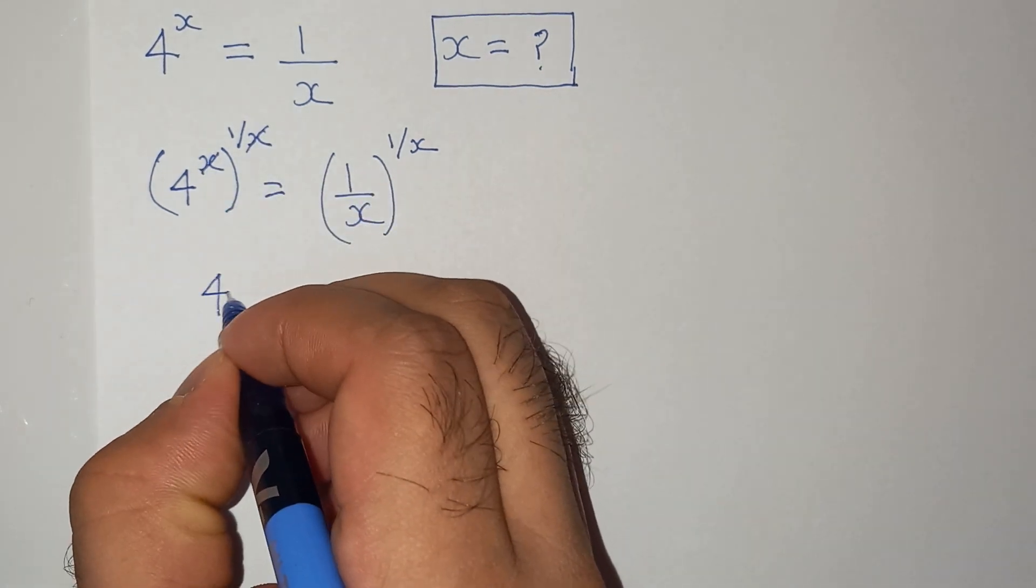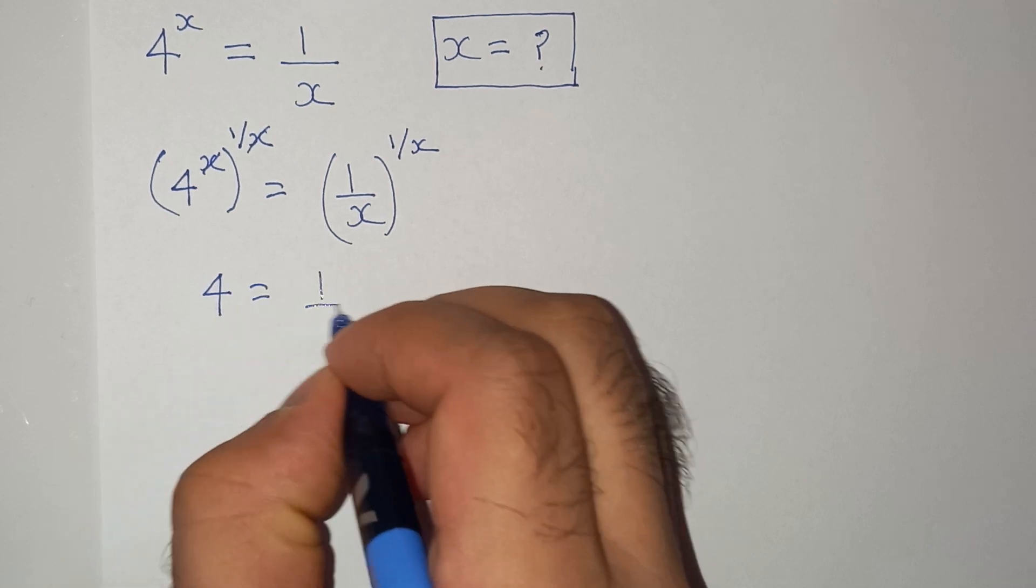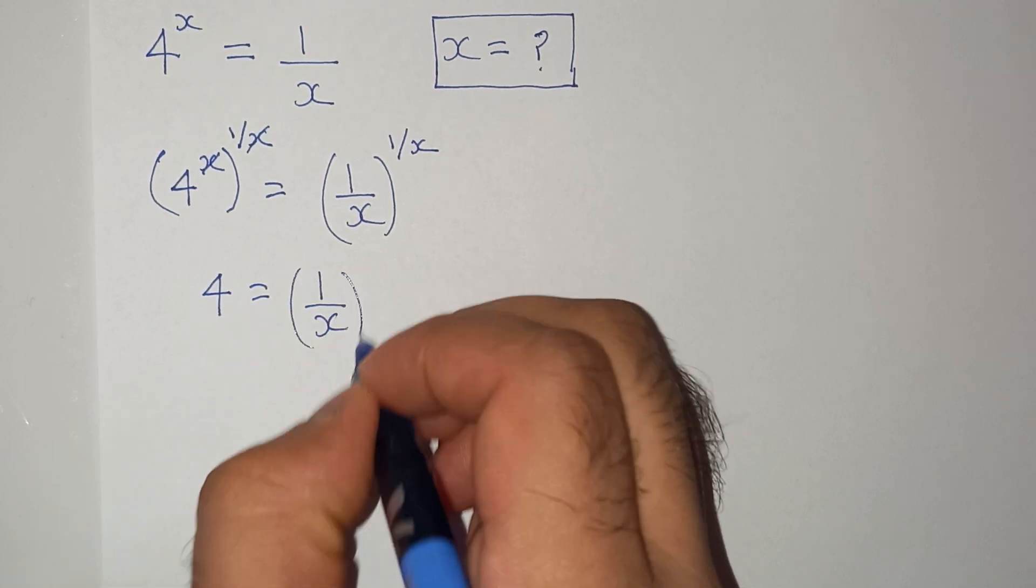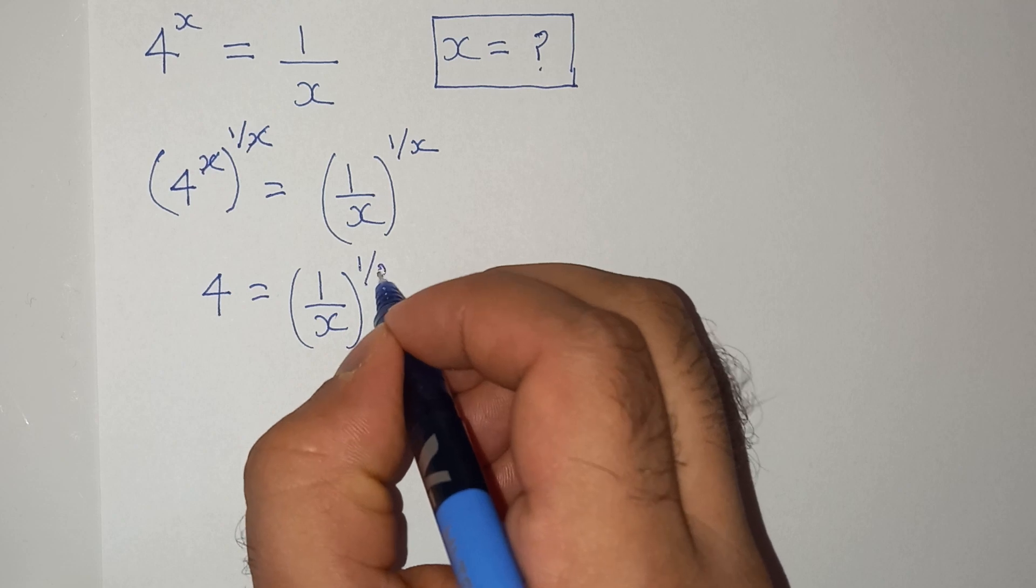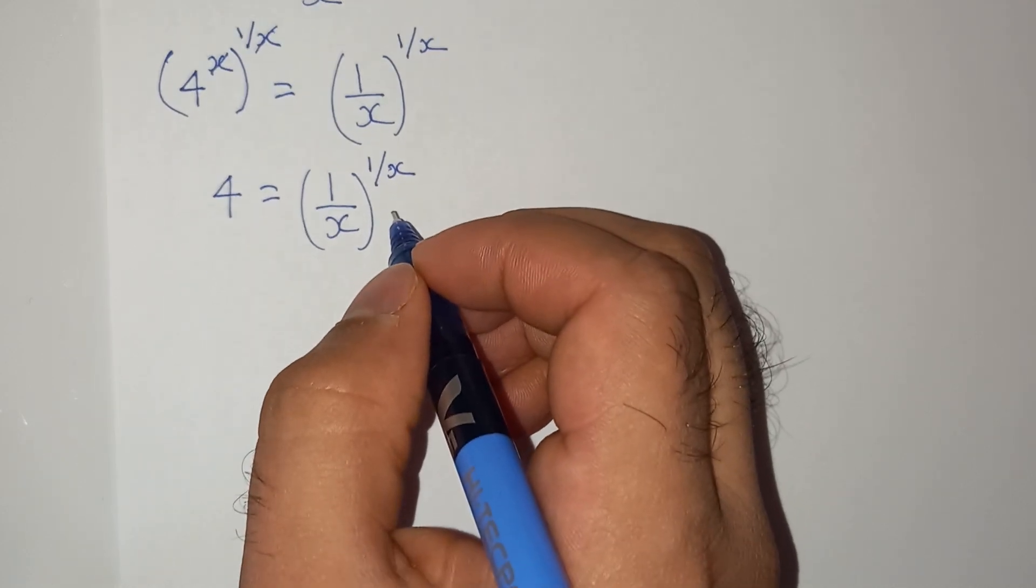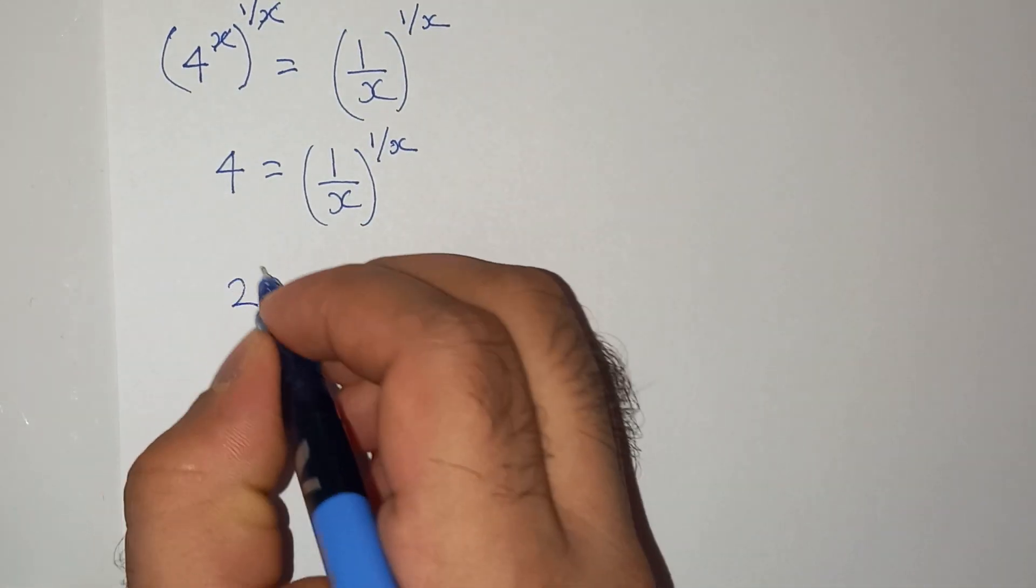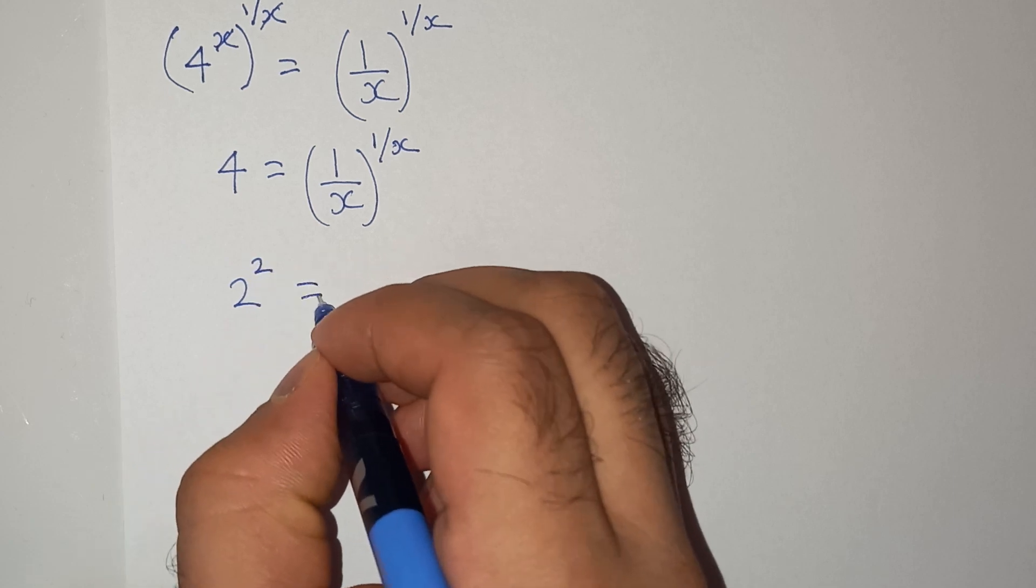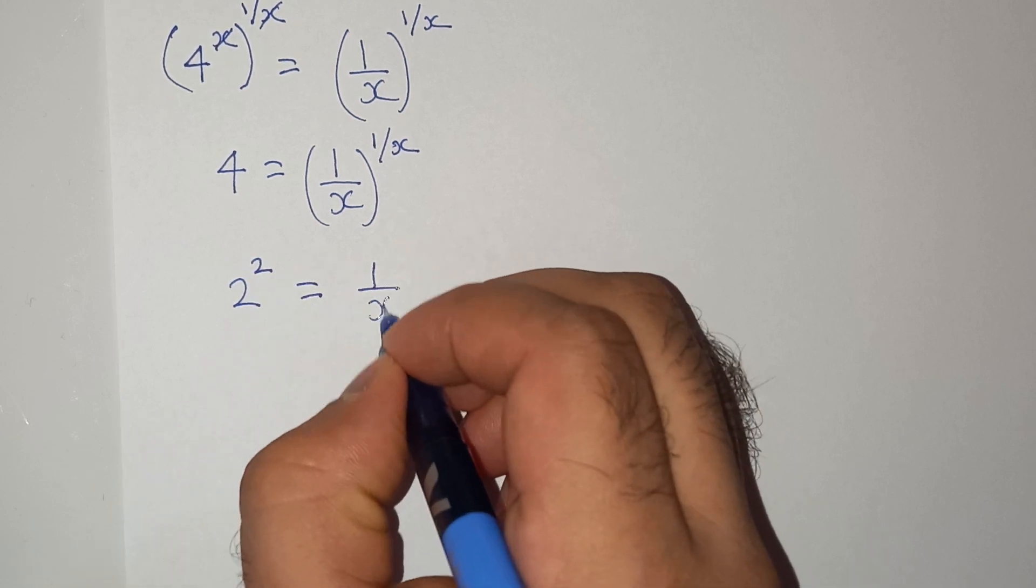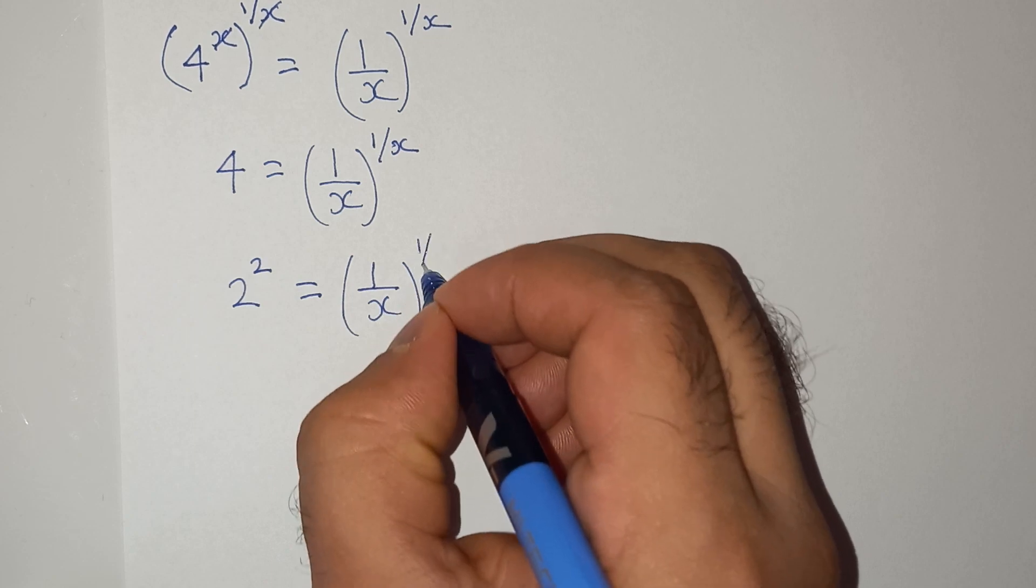So we have on the left hand side 4, and on the right hand side we have (1/x)^(1/x). Now this 4 can be written as 2^2 = (1/x)^(1/x).